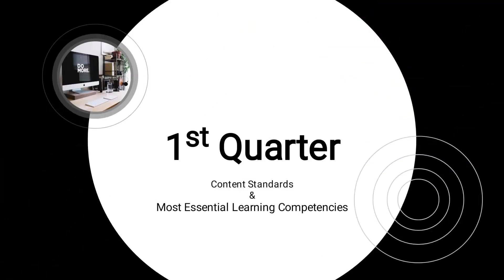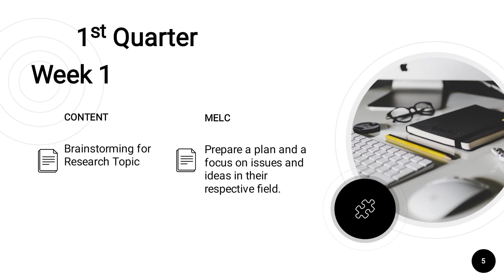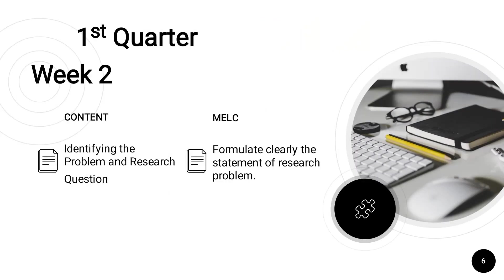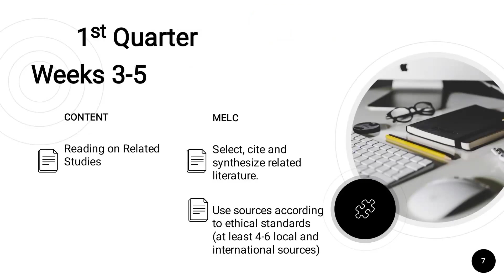First quarter content standards and most essential learning competencies: Week one — brainstorming for research topic; prepare a plan focused on issues and ideas in their respective field. Week two — identifying the problem and research question; formulate clearly the statement of the research problem. Weeks three to five — reading related studies; select, cite, and synthesize related literature.